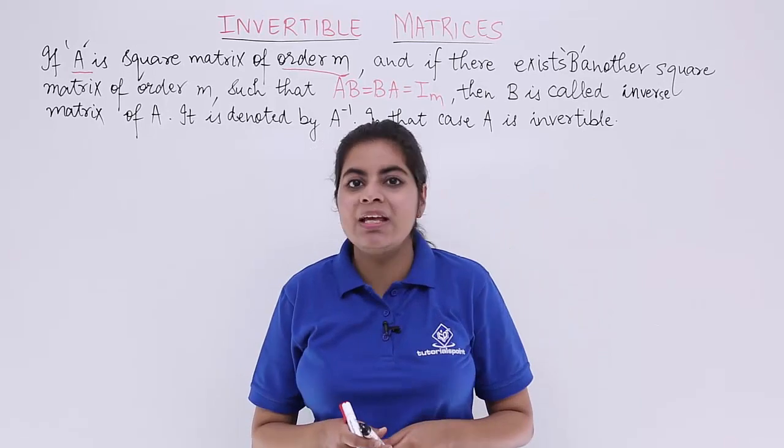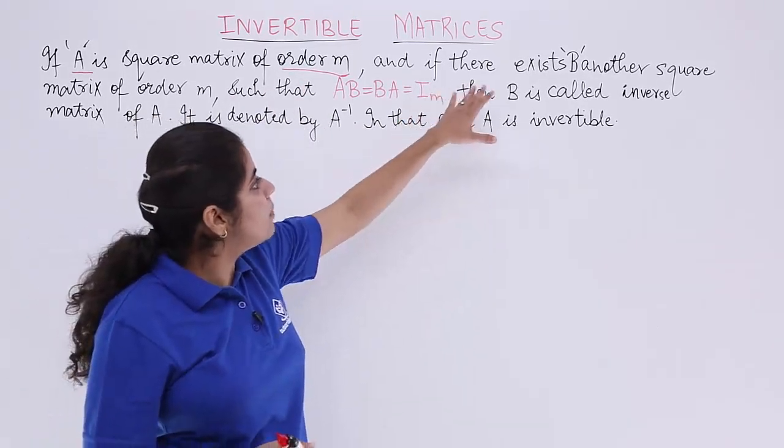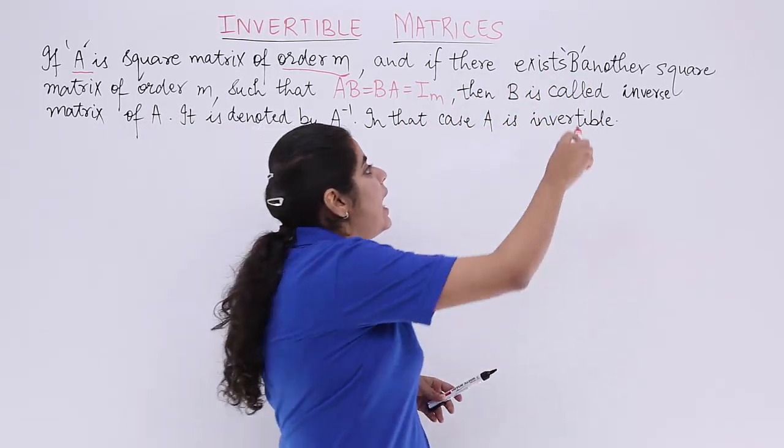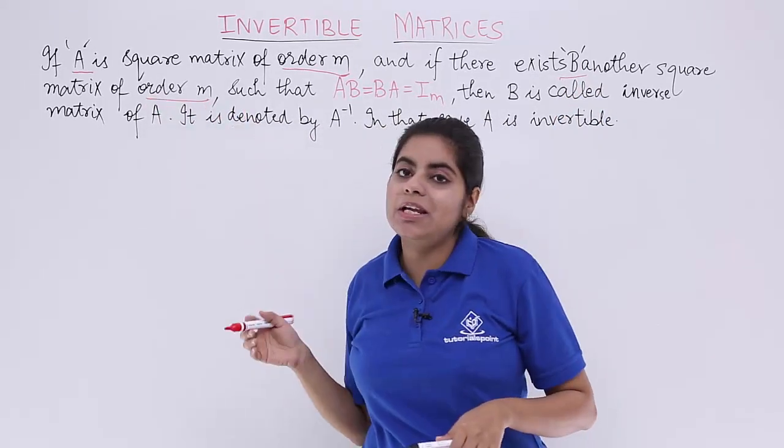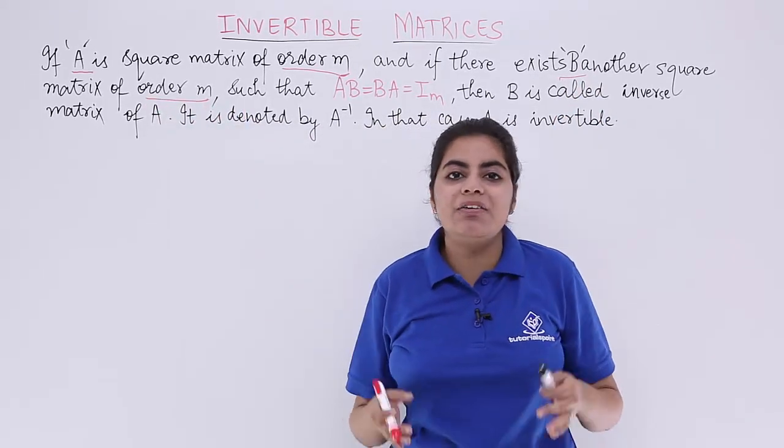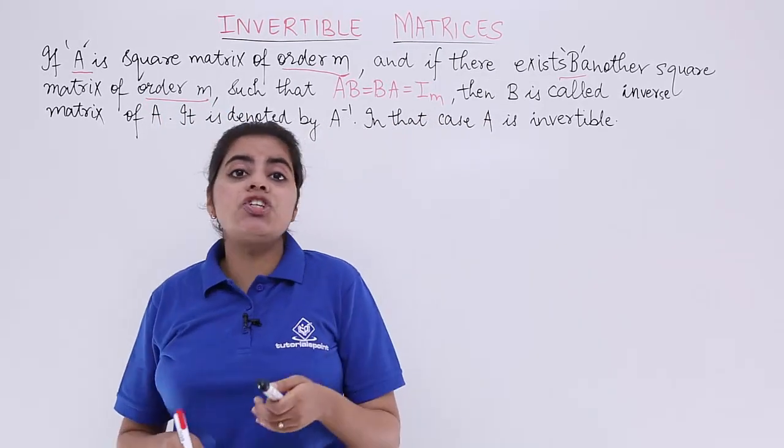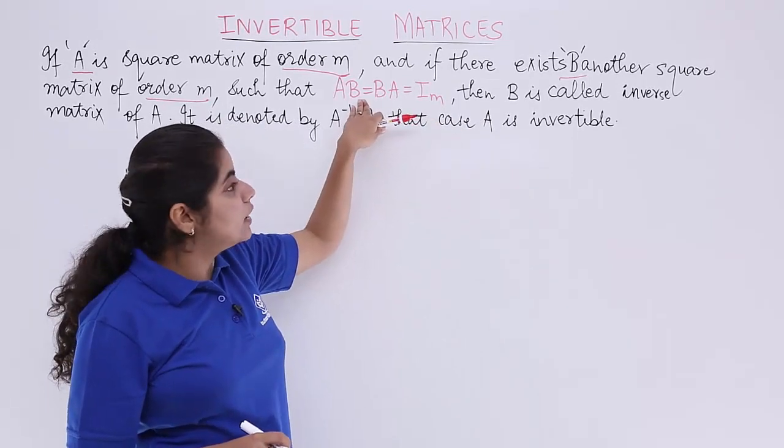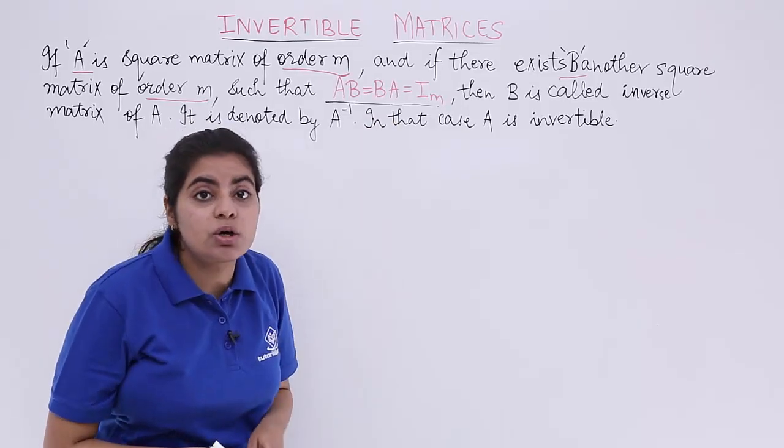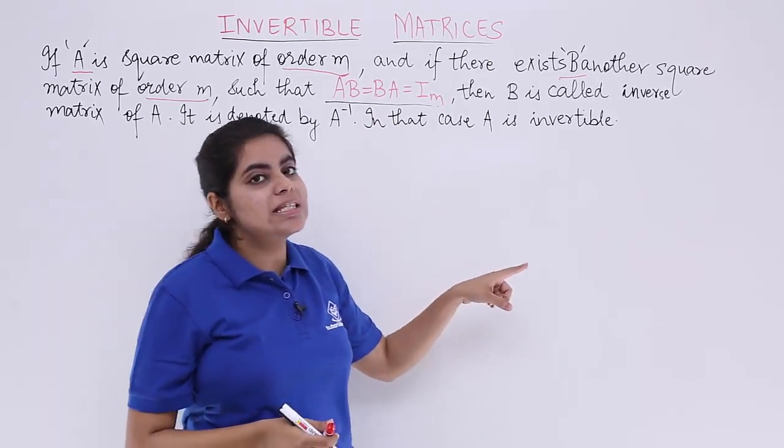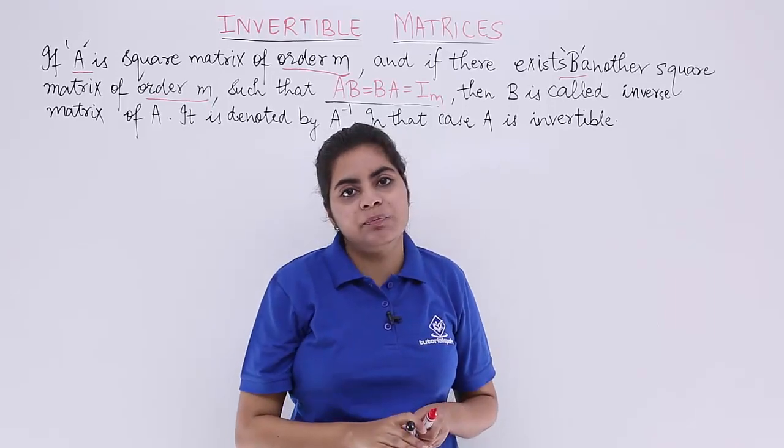So if A is a square matrix of order M, also given to me is a square matrix, another matrix which is B and the order of the B matrix is also M. These both are square matrices. Then what happens is if the condition satisfies that AB, the product of A and B, is equal to BA is equal to an identity matrix of the same order, then I say that the matrix B is called the inverse of A and A is invertible.